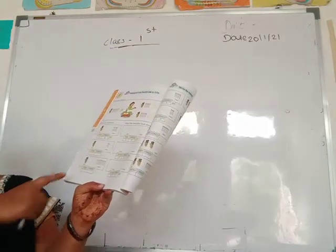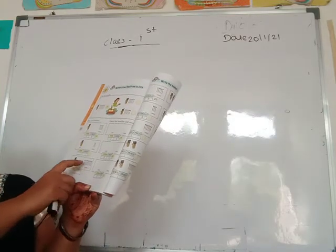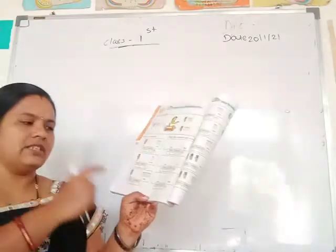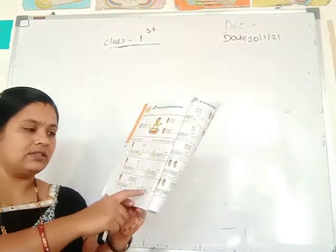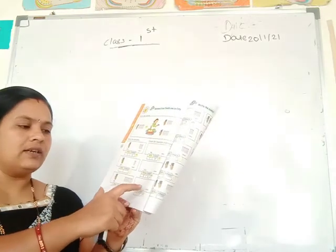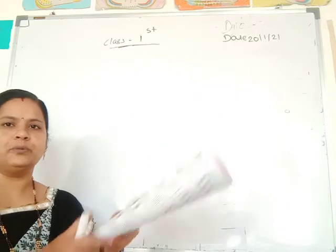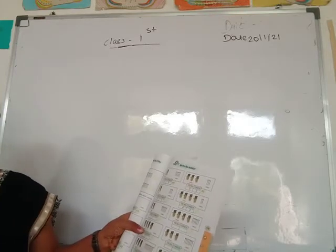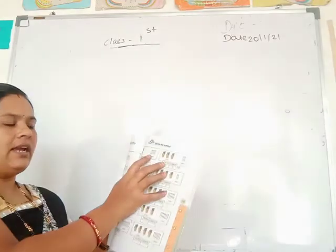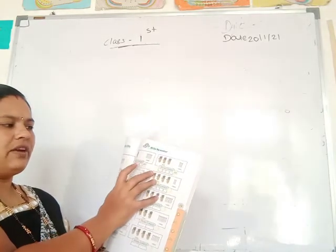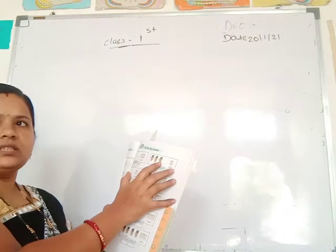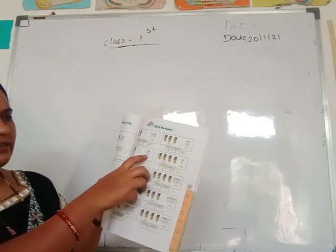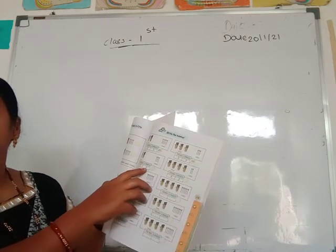Then next: 10s here only 1 bundle and 1s — 1, 2, 3, 4, 5, 6, 7, 8, 9 — answer 19. Then write the number: 10s 2 means 20 and 1s 1, 2, 3, 4, 5 — 20 plus 5 is 25. Then 10s 3 means 30 and 1s 3 — number is 33. Then 10s 2 and 1s 3 — means 23.